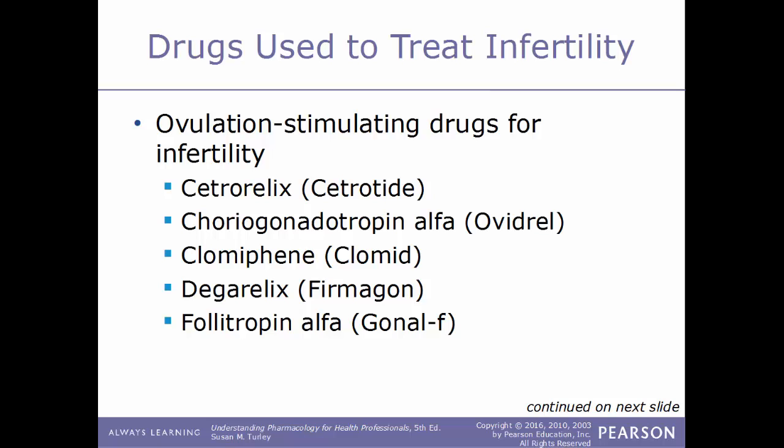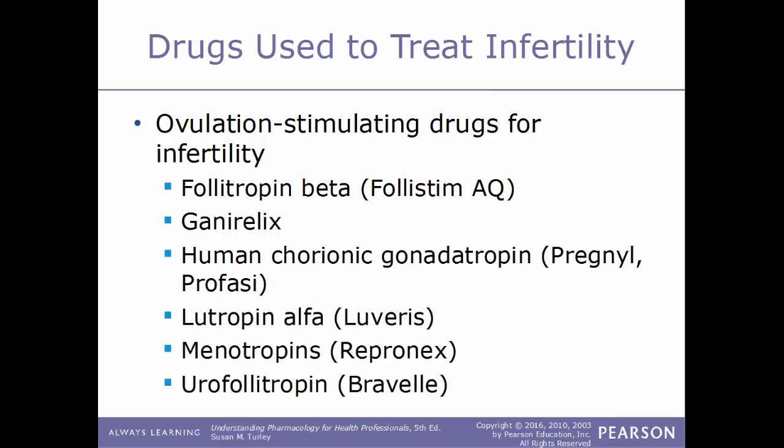Examples of ovulation-stimulating drugs include cetrorelix (trade name Cetrotide), choriogonadotropin alfa (Ovidrel), clomiphene (Clomid), degarelix (Firmagon), follitropin alfa (Gonal-F), and follitropin beta (Follistim AQ).